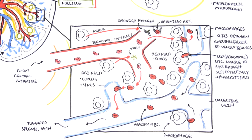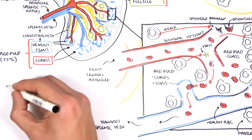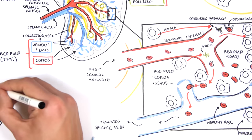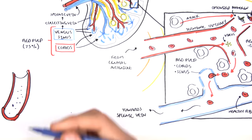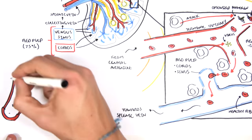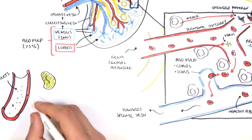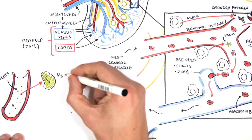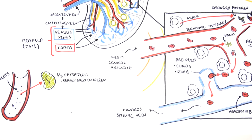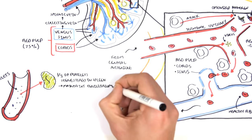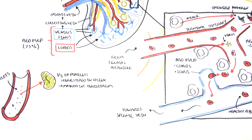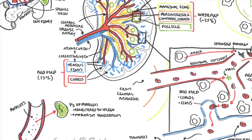The final important role of the spleen, aside from the white pulp and red pulp functions, is sequestration of platelets. Platelets, also known as thrombocytes, are circulating factors important in coagulation and forming clots. One-third of platelets are actually sequestered or stored in the spleen, so the spleen is important in maintaining good levels of platelets in circulation. I hope you enjoyed this video on spleen anatomy and physiology. Thank you for watching.